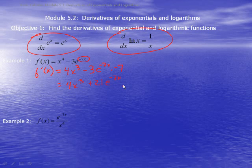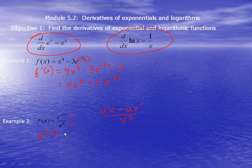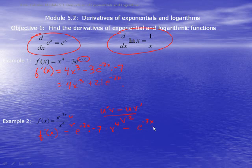Example 2: f of x is equal to e to the negative 7x over x to the 4th. Since this is a rational function, we use the quotient rule: u prime v minus u v prime, all over v squared. Letting u equal e to the negative 7x and v equal x to the 4th, the derivative is: the derivative of u, which is e to the negative 7x times negative 7, times x to the 4th, minus e to the negative 7x times 4x cubed, all over x to the 4th quantity squared.